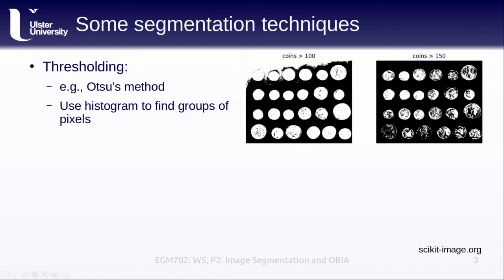The problem is that there can be substantial variation across an image. As you can see here, the background is a bit lighter in some parts than others. So we might want to use an adaptive or local technique, where we calculate a threshold based on a local window in order to do this kind of segmentation.